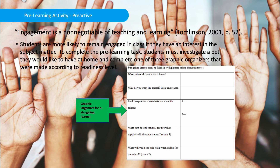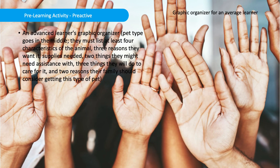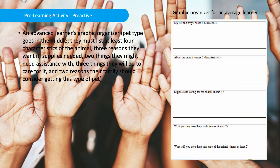The first graphic organizer is for a learner on the struggling side, the second is for an average learner, and the third is for an advanced learner. For the advanced graphic organizer, pet type goes in the middle. Students must list at least four characteristics of the animal, three reasons they want it, supplies needed, two things they might need assistance with, three things they will do to care for it, and two reasons their family should consider getting this type of pet.